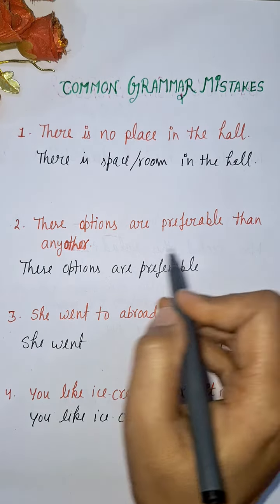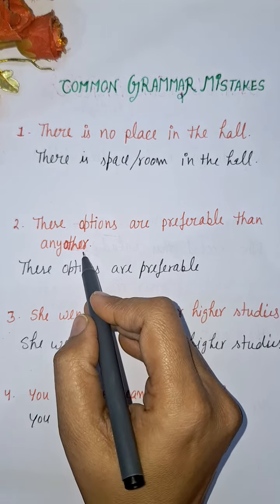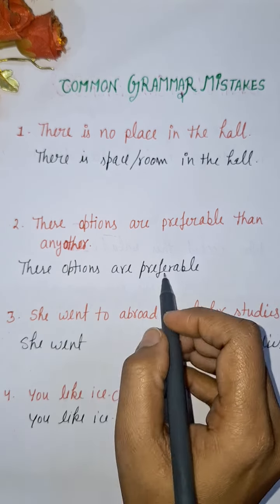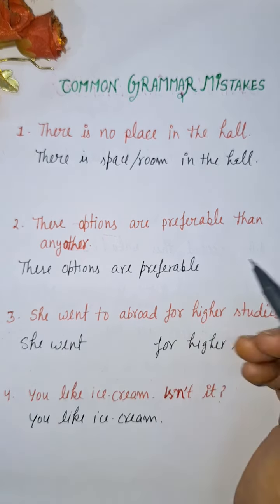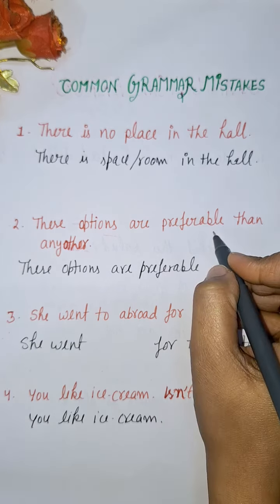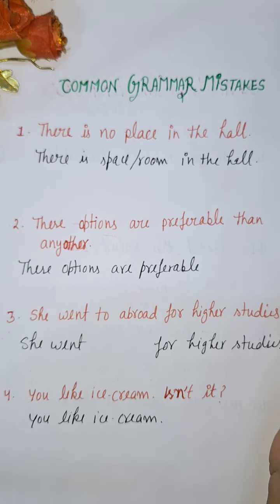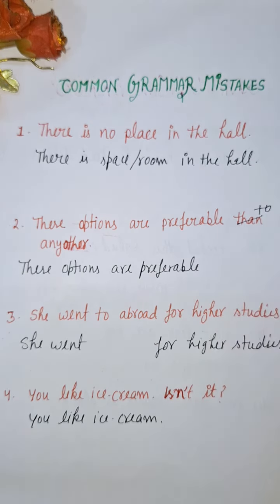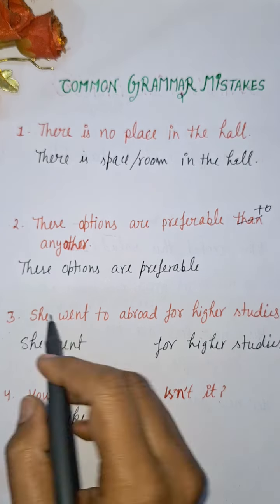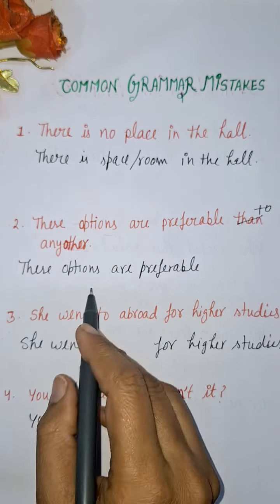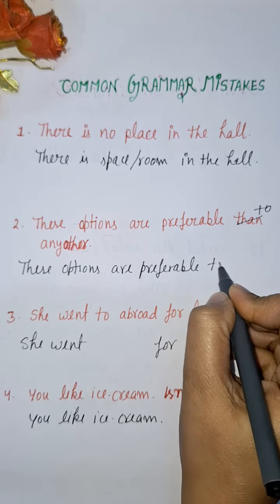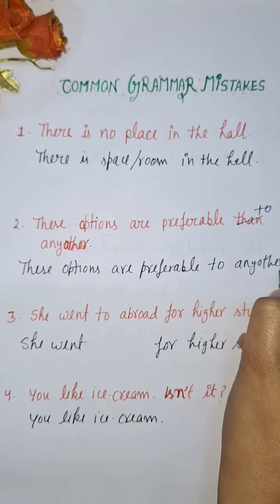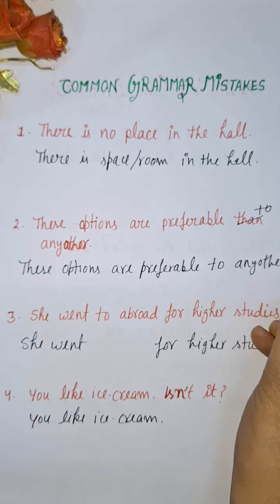Next: 'These options are preferable than any other.' This is wrong. After 'preferable' or 'prefer,' we always use 'to,' not 'than.' So the correct sentence is: 'These options are preferable to any other.'